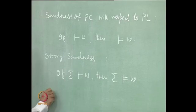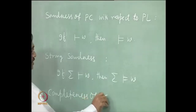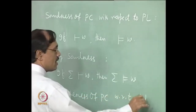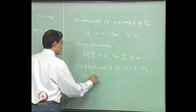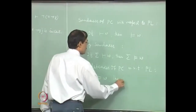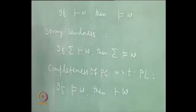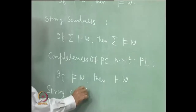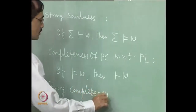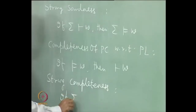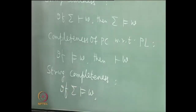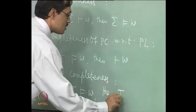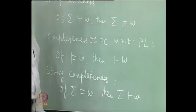Similarly, you can think of completeness of PC with respect to PL. That will look like: if w is valid, then it has a proof in PC. In the same way, you have strong completeness, which says: if sigma entails w is a valid consequence in PL, then sigma entails w is provable in PC.